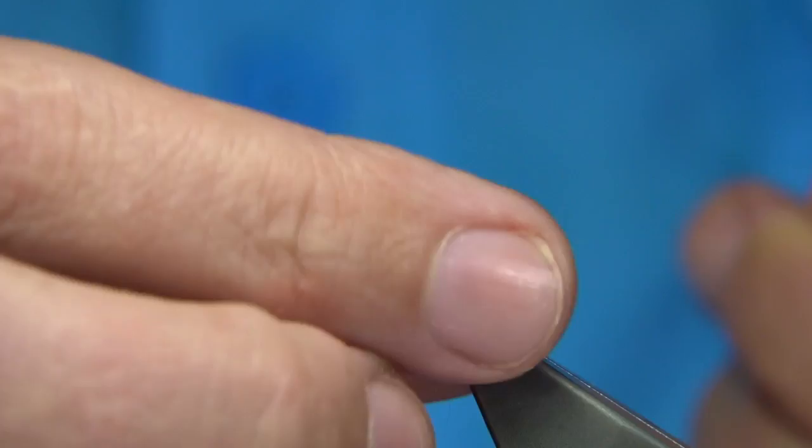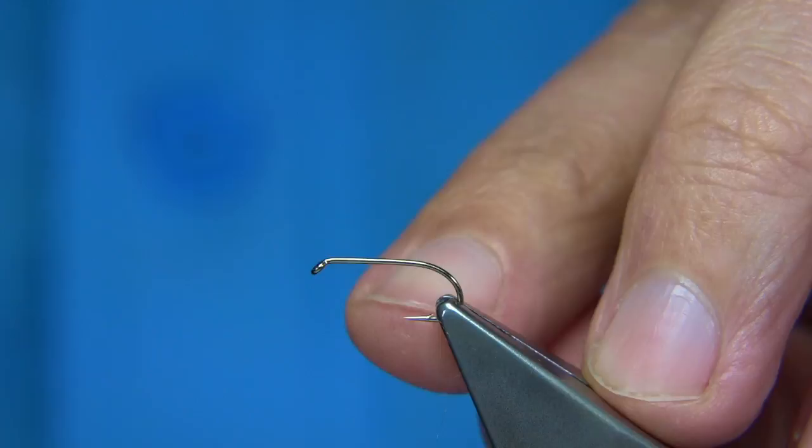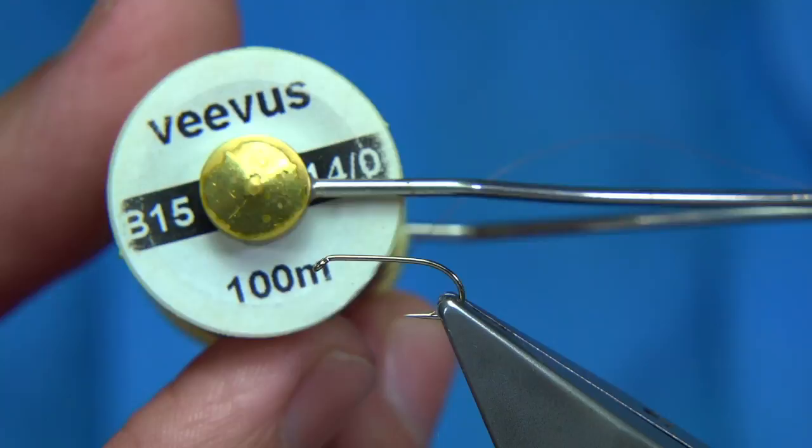To tie the double decker emerger, the hook I'm using is a Fulling Mill, it's an all-purpose medium. In this case, it's a size 12. Now, I'm using a different thread than I normally use. This is the Veevus thread 14-0 and it's a nice brown color, quite a light colored brown.